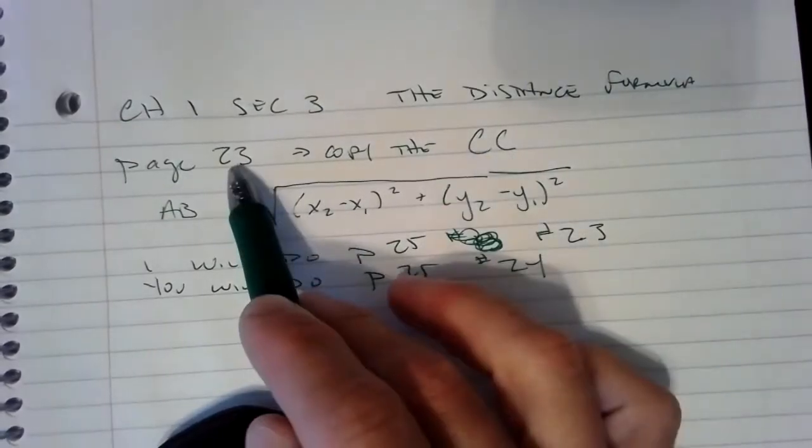So you might have already paused and copied down the core concept on page 23. Here it is. It actually is from the Pythagorean theorem. That's something we're going to get to later on in the year, but I'm going to go ahead and turn to page 25 and do number 23 with you.